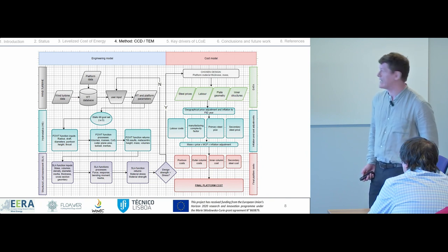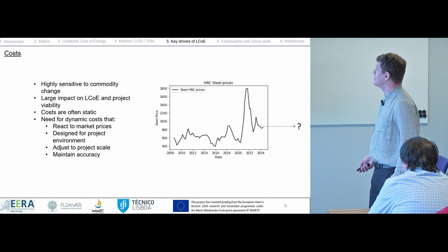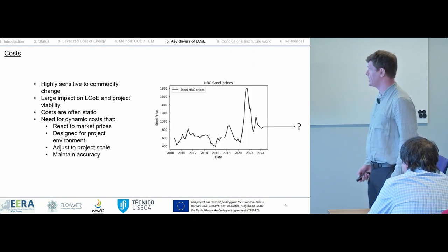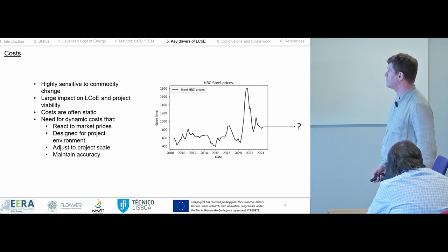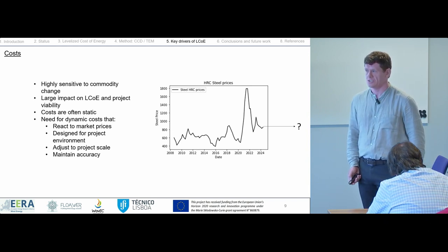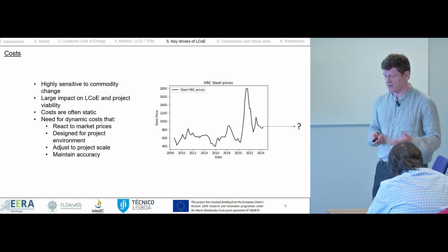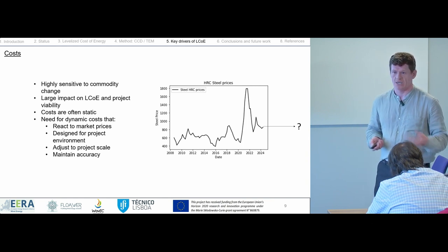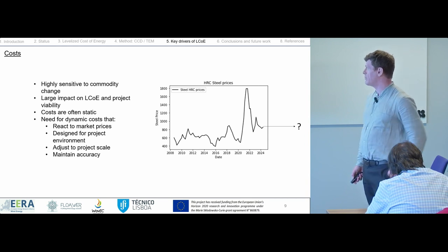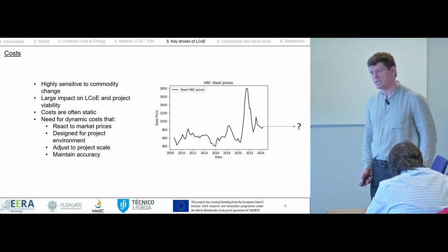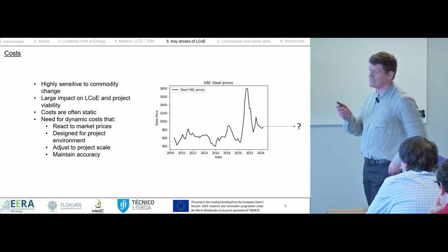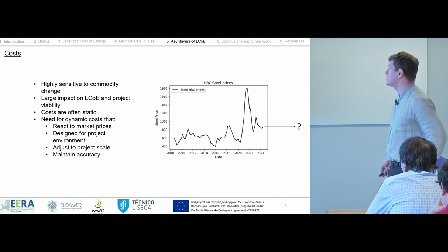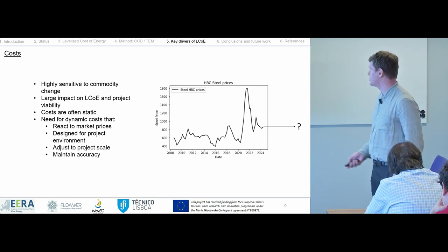Costs in general with floating offshore wind are highly sensitive to commodity changes, with a large impact on levelized cost of energy and project viability. Costs are often static in literature — a fixed cost per kilowatt or per unit of mass set at the time of publication that does not change over time. What I want to develop is a range of dynamic costs that change over time with commodity changes, react to market prices, are designed for the project environment, and adjust to scale. The goal is one cost function that reacts to capacity, environmental conditions, and commodity change.